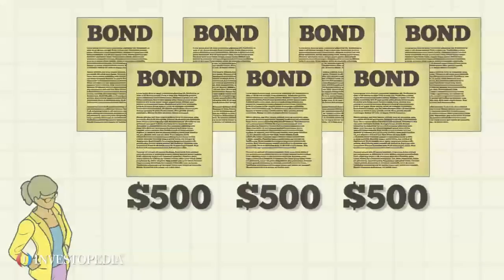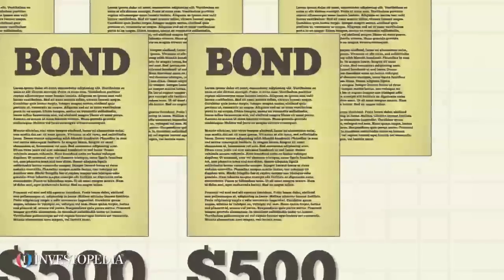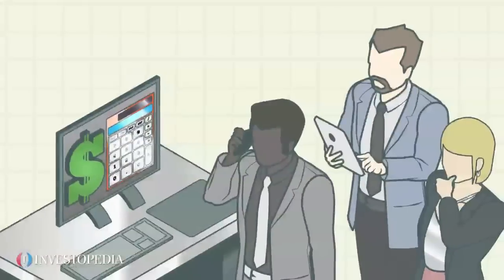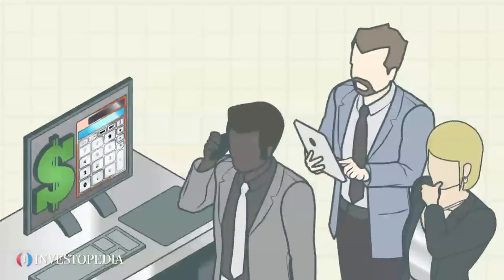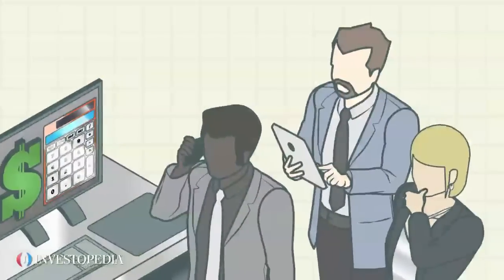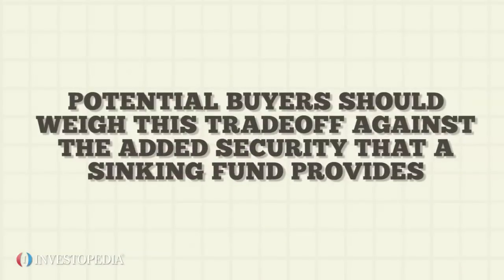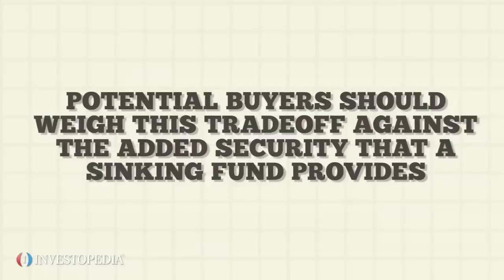The bonds subject to call are chosen randomly based on their serial number. While this aspect of the bond issue helps the issuer, it represents a drawback for investors who may unwillingly have to sell back their notes at an unfavorable price. Potential buyers should weigh this trade-off against the added security that a sinking fund provides.